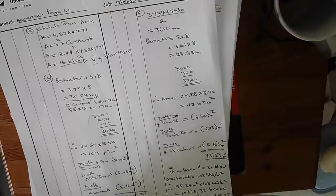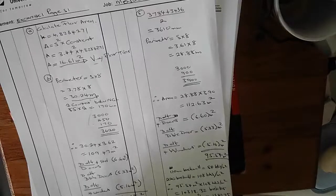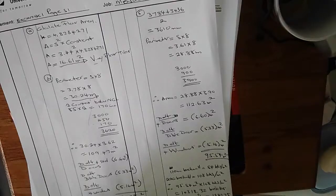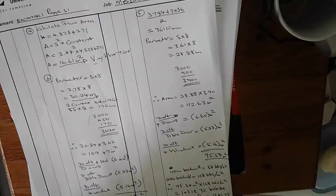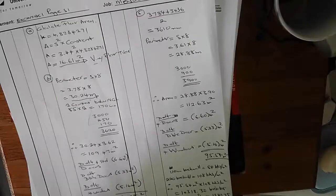There is a huge importance here that you should know: everything on site that has a cost implication must be measured correctly. If you do not deduct for the openings, doors, and windows, you are going to over-measure, over-order, and over-price the job — and you won't get the job because your measurement is unrealistic. Think about it: if you're ordering material for a space where a door is, you're not going to plaster there, so what are you going to do with that material? Always make adjustments for openings.